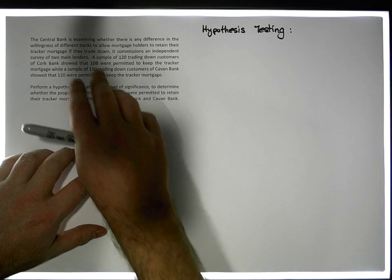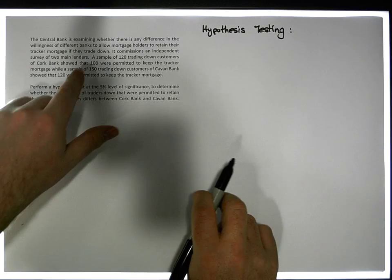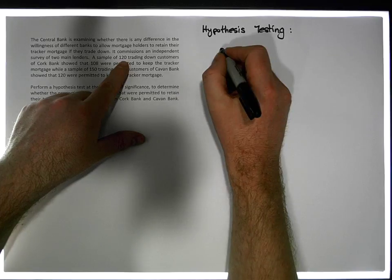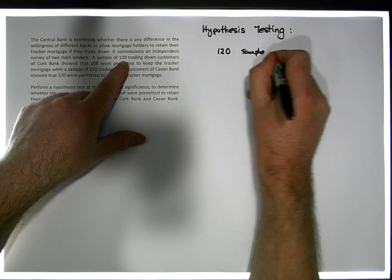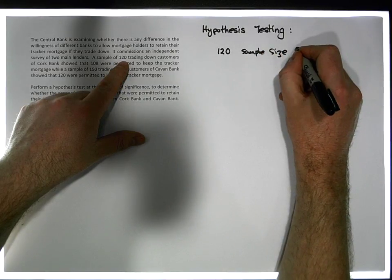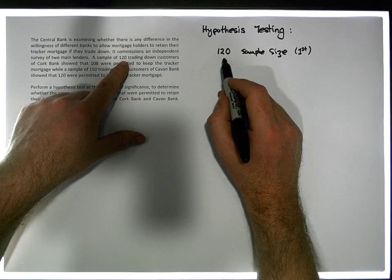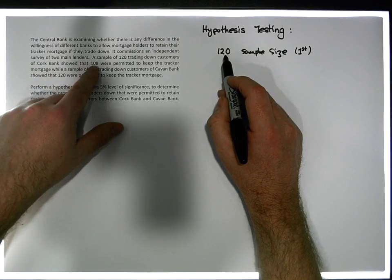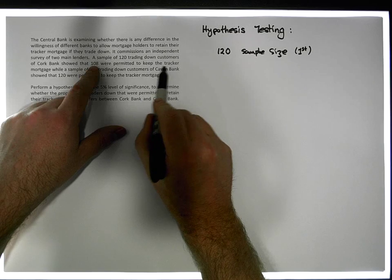We have two samples and two pieces of information given with respect to each sample. The first sample of 120, let's pull out the numbers. So a sample of 120, that's my sample size, the first sample size. There were 120 people, 120 mortgage customers in that particular sample from a Cork bank. It showed that 108 of them customers were allowed, permitted by the bank to keep their tracker mortgage.